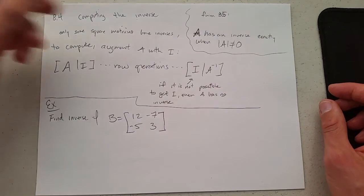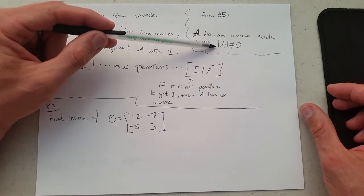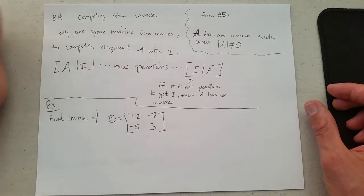How do we compute the inverse? In section 8.5, when we get there, if you get the determinant not equal to zero, your matrix has an inverse.